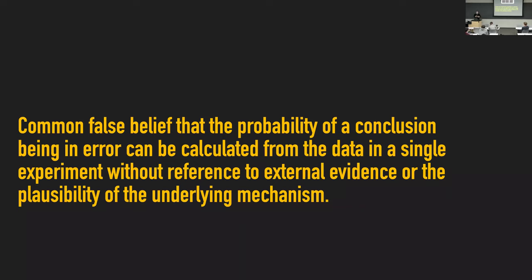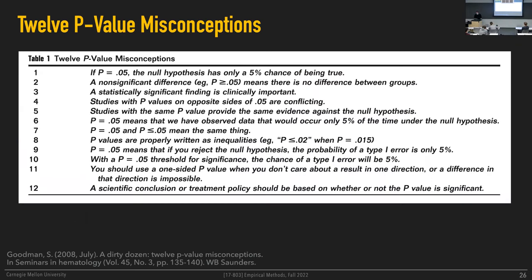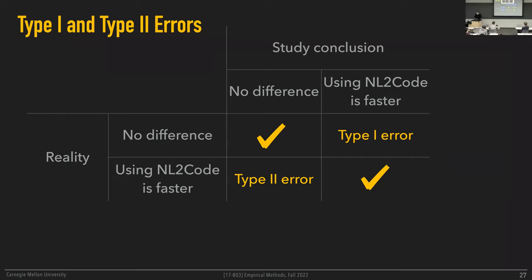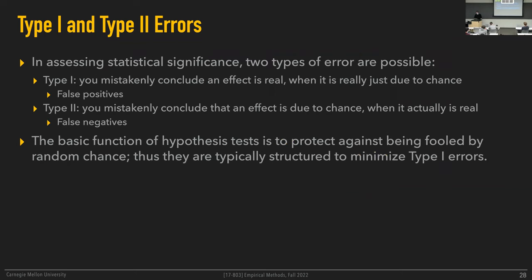The p-value is not the probability of this outcome being due to chance — that's one of the most common misconceptions. Hongbo has prepared a quiz with this and other misconceptions about p-values. If you've taken a statistics class before, you've heard of Bayes' theorem, and it explains the relationship between these two probabilities and why they're actually different. It is a common false belief that the probability of a conclusion being an error can be calculated from the data in a single experiment without reference to external evidence — the p-value doesn't tell you what you'd like it to tell you.